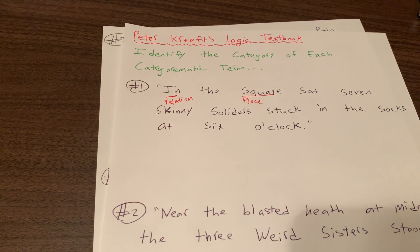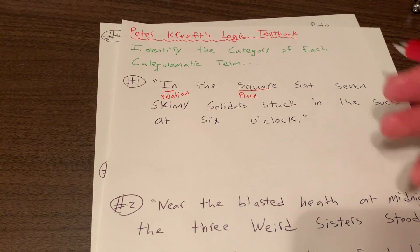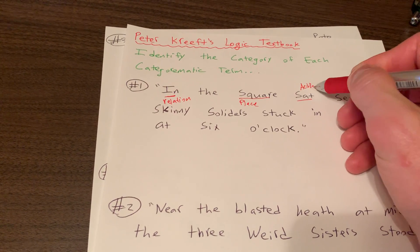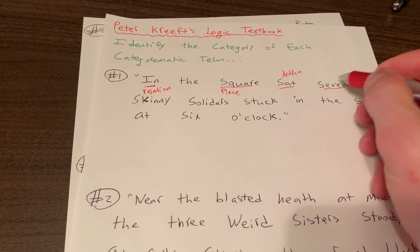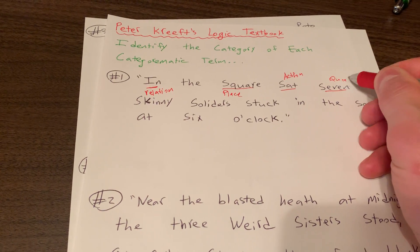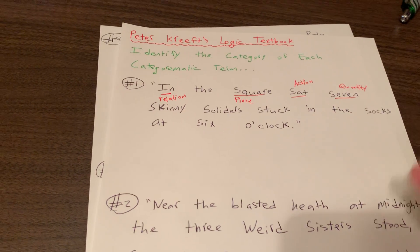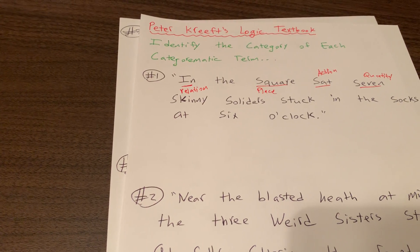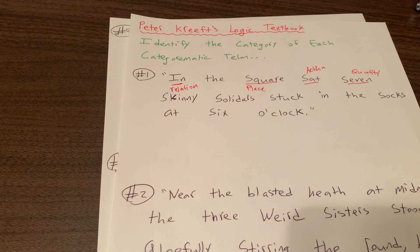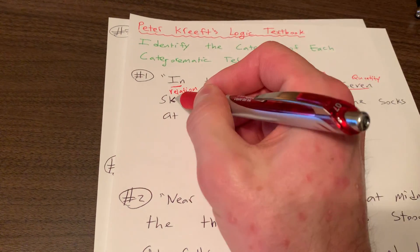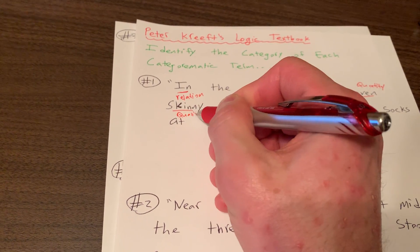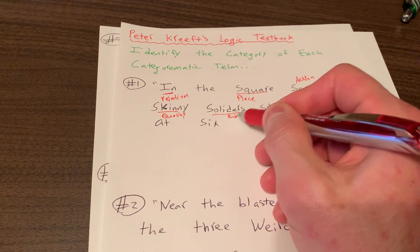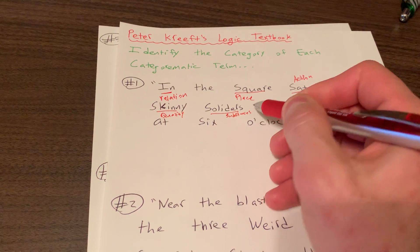'Sat' — that is clearly an action. Sitting is an action. 'Seven' — clearly a quantity. 'Skinny soldiers' — being skinny is a quality of the soldiers. And 'soldiers' — well, those are substances. We can point to those soldiers.